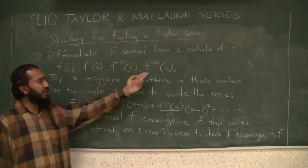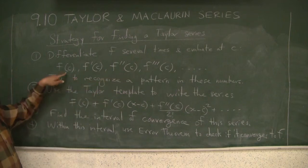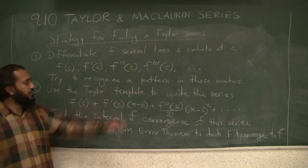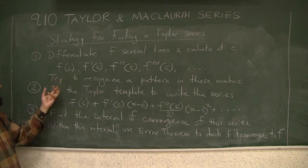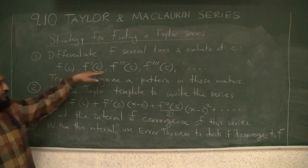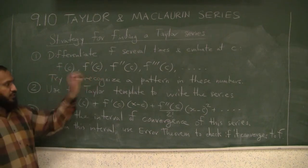You differentiate several times and evaluate the derivatives at c: f of c, f prime of c, f double prime of c, and so on. These are numbers—when you evaluate at a given c, you get numbers out of this.